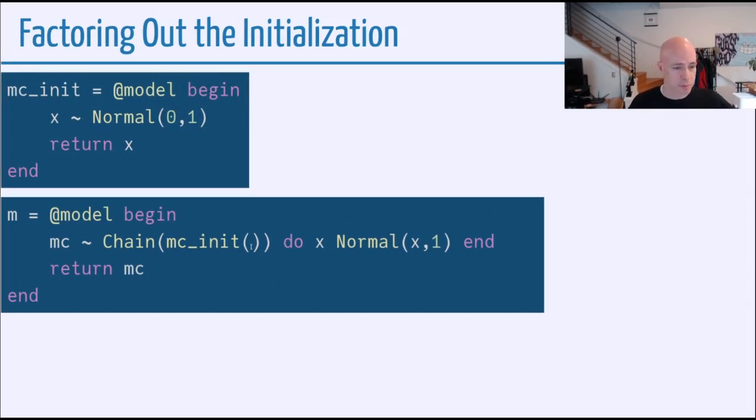So in Sauce, any distribution or any measure can be expressed as itself a Sauce model. So what was this Normal(0,1) can now be mc_init, where mc_init is itself another Sauce model. So this simple example, we can just say, let's just draw a Normal(0,1) and then return that value.